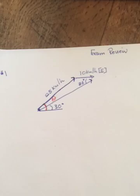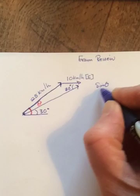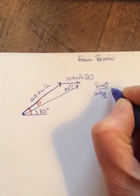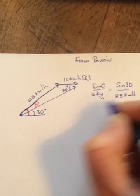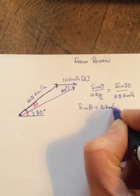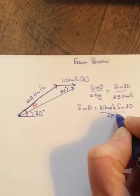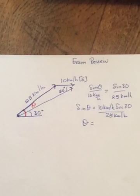Looking for angles, so sine theta over 10 kilometers per hour equals sine 30 over 25 kilometers per hour. So sine theta equals 10 kilometers per hour sine of 30 over 25 kilometers per hour.